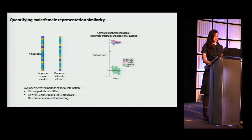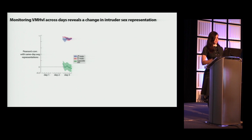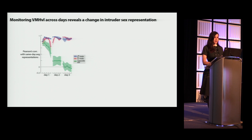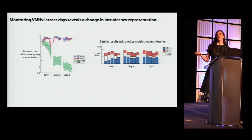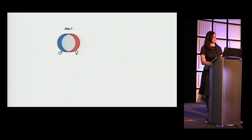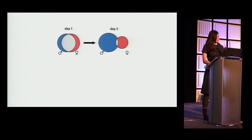What was surprising is that when we looked at activity across all three days, we saw a change in this representation. On day three there are nicely decorrelated representations of males and females. But on day two and especially day one, there is a very different representation of intruder sex. On the first day, a lot more cells respond to both males and females. By the third day, we have two largely non-overlapping populations. This unexpected effect led us to ask what drives this separation and what it means for VMHVL's role in social behavior.